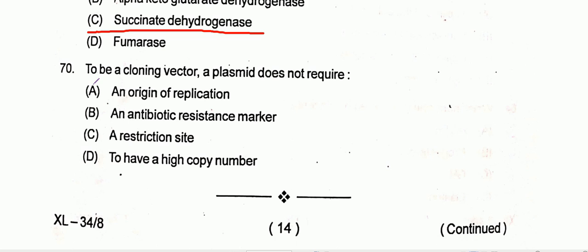Question number 70: To be a cloning vector, a plasmid doesn't require a high copy number, but all three of the following are needed: an origin of replication, an antibiotic resistance marker, and a restriction site.